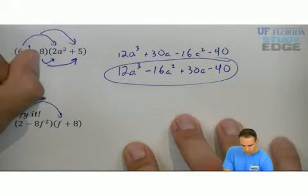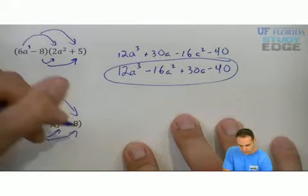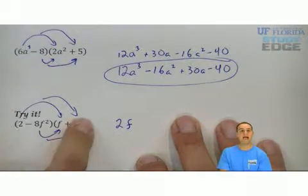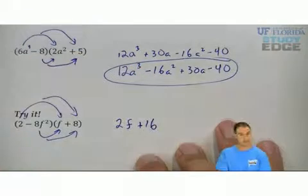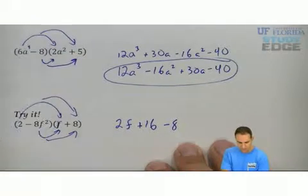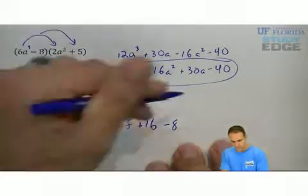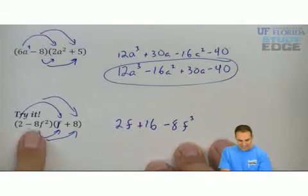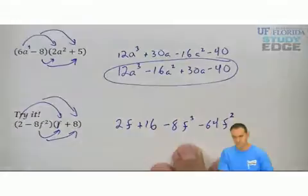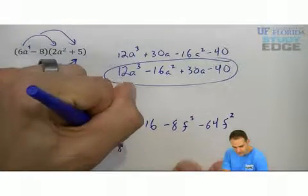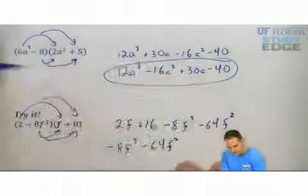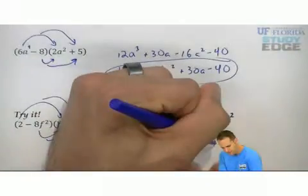Here we go — distributing twice, which we call FOIL. First: 2 times f is 2f. Outer: 2 times 8 is 16. Inner: negative 8f squared times f — that's negative 8, f squared times f is f cubed. Last: negative 8 times 8 is negative 64f squared. From highest power to lowest power: negative 8f cubed minus 64f squared plus 2f plus 16.